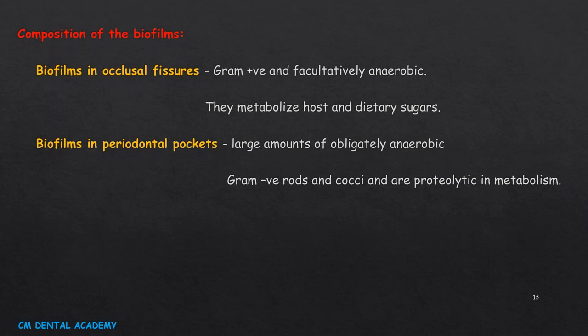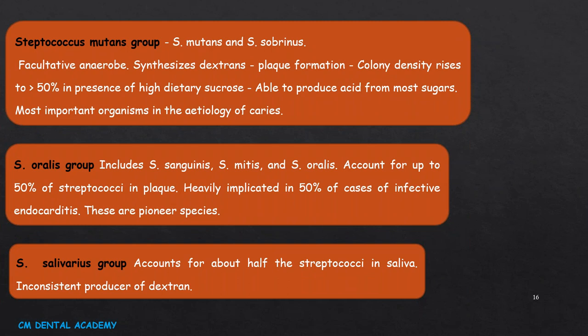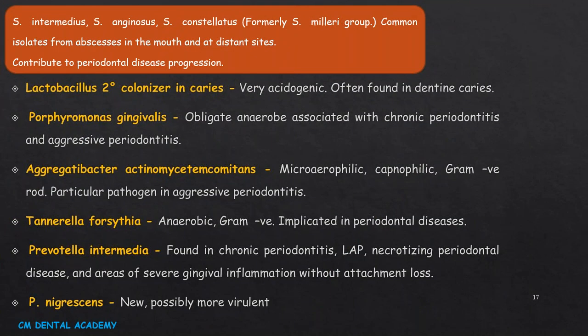Biofilms in periodontal pockets contain large amounts of obligate anaerobes — organisms which grow in the absence of oxygen — and gram-negative rods and cocci that are proteolytic, breaking down protein. Streptococcus mutans group, Streptococcus oralis group, salivarius group, and intermedius group are present. Lactobacilli are secondary colonizers in caries, are acidogenic, and are found in dentine caries. Porphyromonas gingivalis are obligate anaerobes associated with chronic periodontitis and aggressive periodontitis.